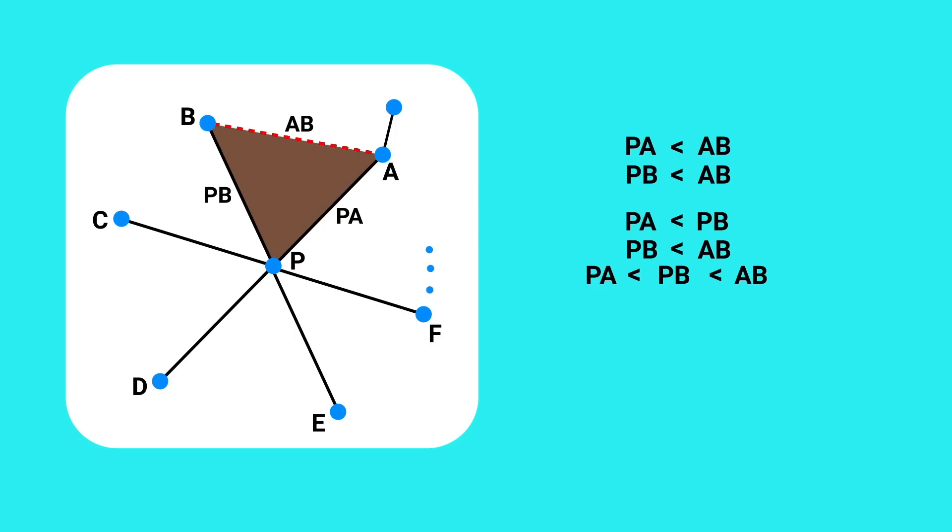And because of that, because AB is the longest side in this triangle, then the corresponding angle must be the greatest as well, which means that it must be greater than 60 degrees.